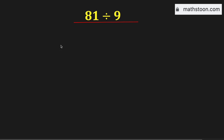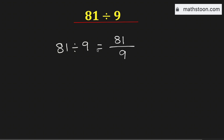In this video we will learn how to divide 81 by 9. We know that this division can be written as a fraction with numerator 81 and denominator 9. Again, we know that 81 can be written as 9 times 9, and in the denominator we have 9.